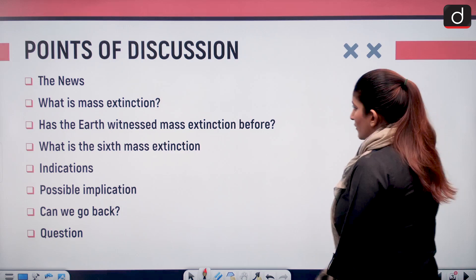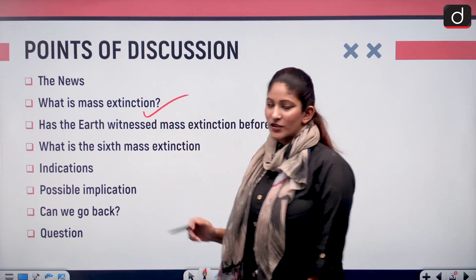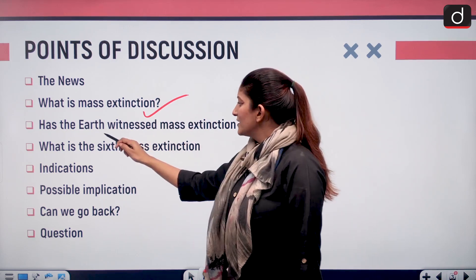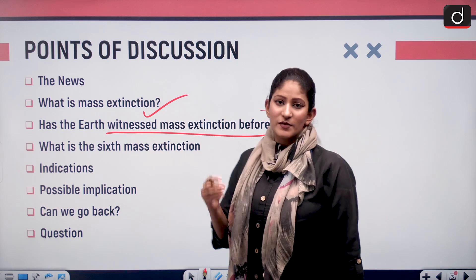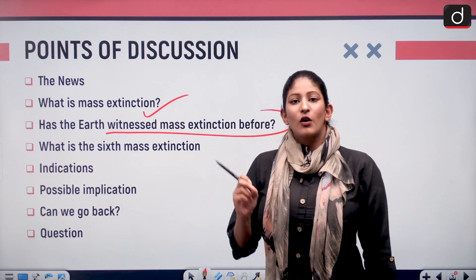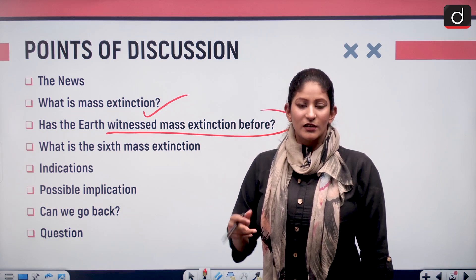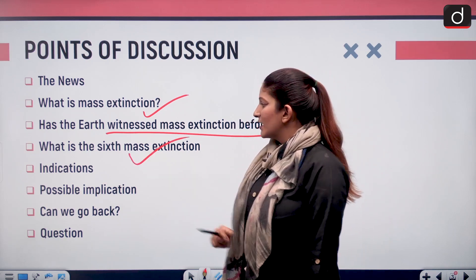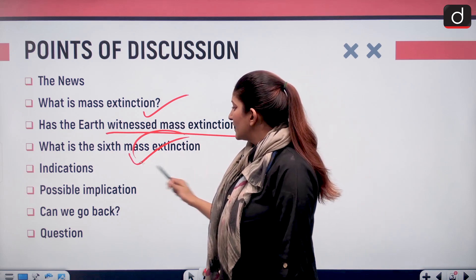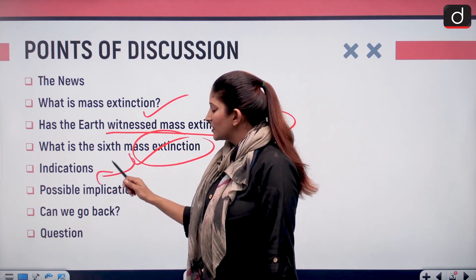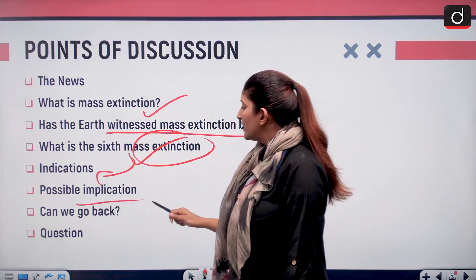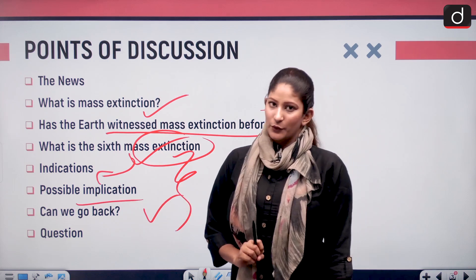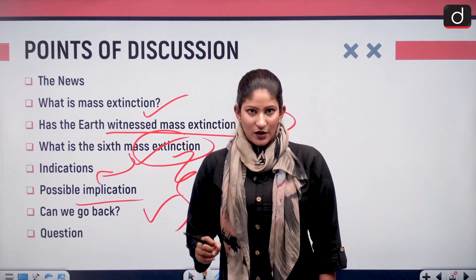These are the main topics we are going to discuss: what is mass extinction — from the perspective of prelims as well as mains; has the earth witnessed mass extinctions before; we will talk about the five earlier mass extinctions; certain preliminary facts are very important; and about the sixth mass extinction — the indications, possible implications, and whether we can go back. These are important from the perspective of mains and prelims both, GS mains paper three.